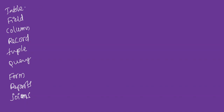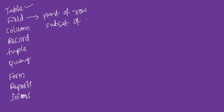We will discuss the table. In the last class we covered table information. Now we move to field. So what is a field? In general, a field is a part of a row — it is a subset of a record.